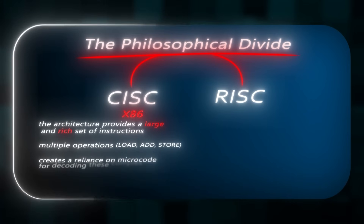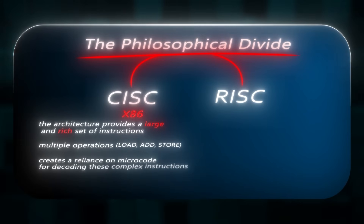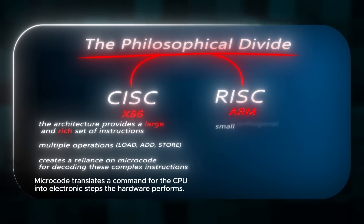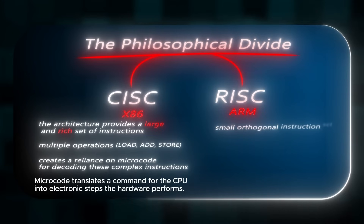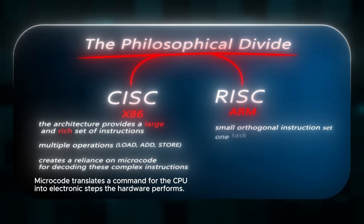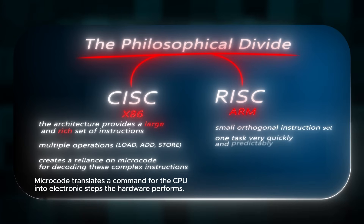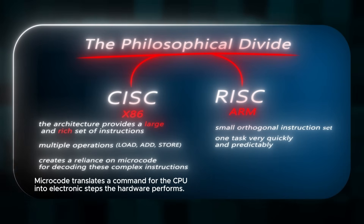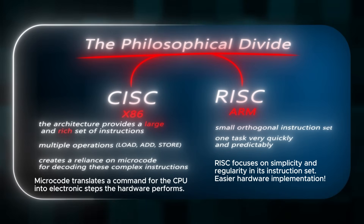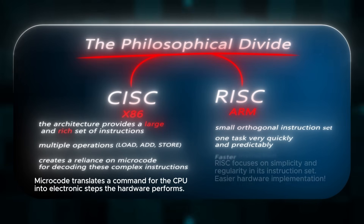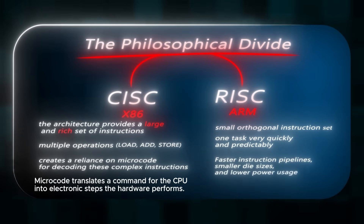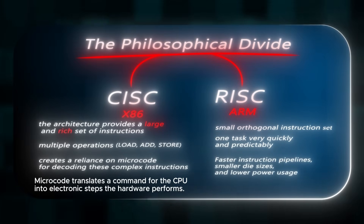This reduces the number of lines in assembly code but makes the chip design much more complicated. It also creates a reliance on microcode for decoding these complex instructions. ARM uses RISC, or Reduced Instruction Set Computing, which emphasizes a small, orthogonal instruction set — meaning fewer instructions, each doing one task very quickly and predictably. RISC encourages software, for example compilers and programmers, to handle complexity rather than the hardware itself. The simplicity of ARM leads to faster instruction pipelines, smaller die sizes, and lower power usage.